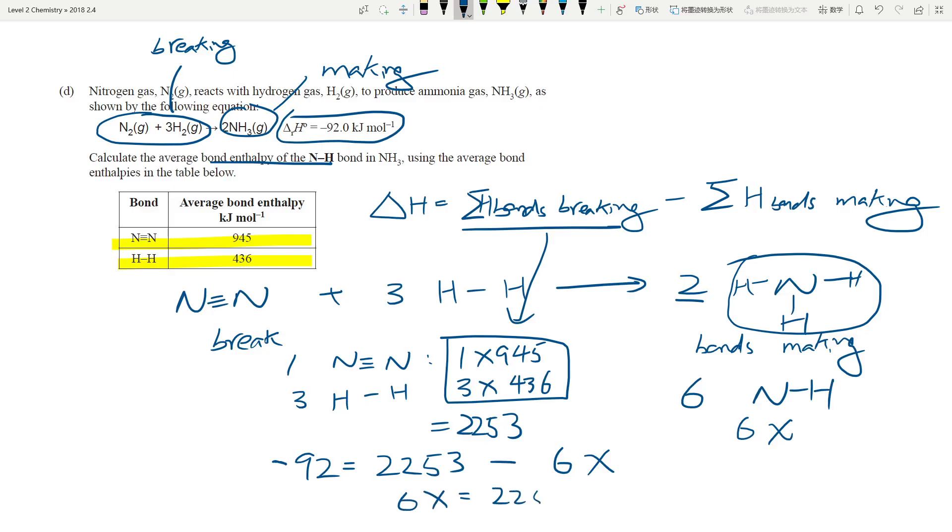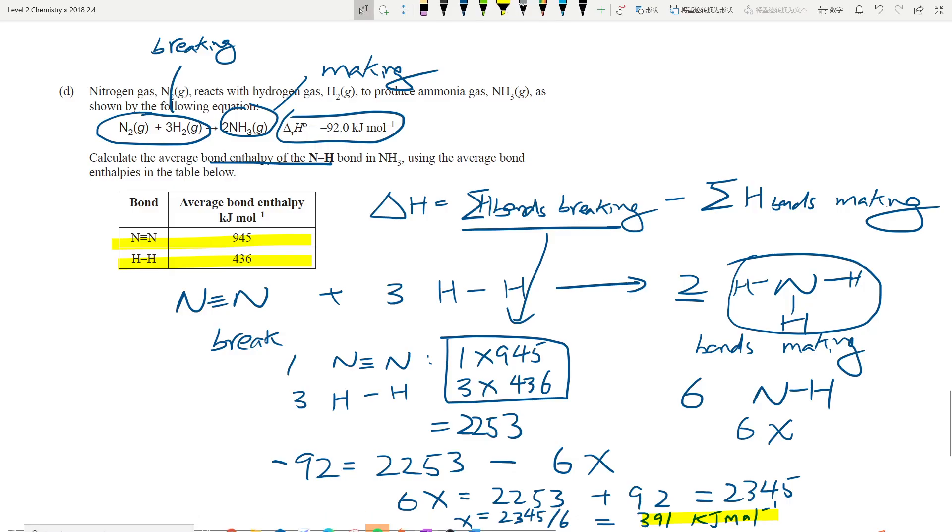What is x? x equals 2345 divided by 6, which gives you 391 kilojoules per mole. Make sure you have the rounding to 3SF as well as the correct unit. This is a slight variation of the normal bond enthalpy equations, but it's pretty standard questions all around.